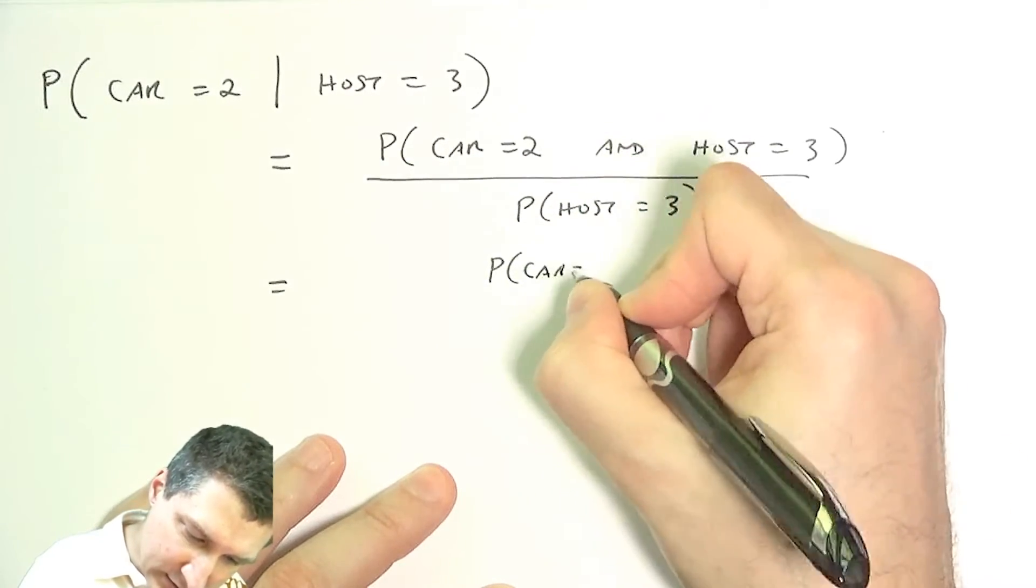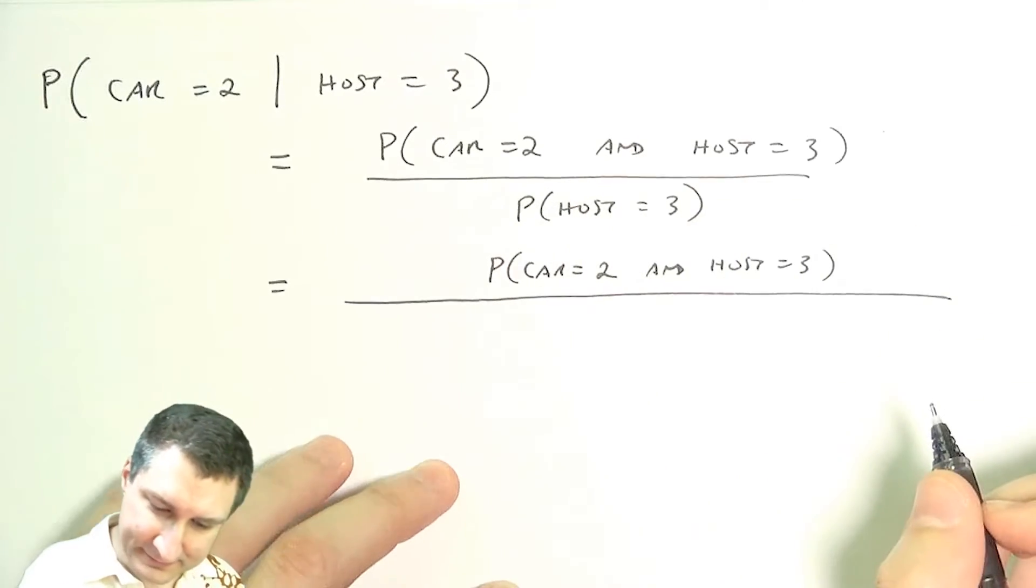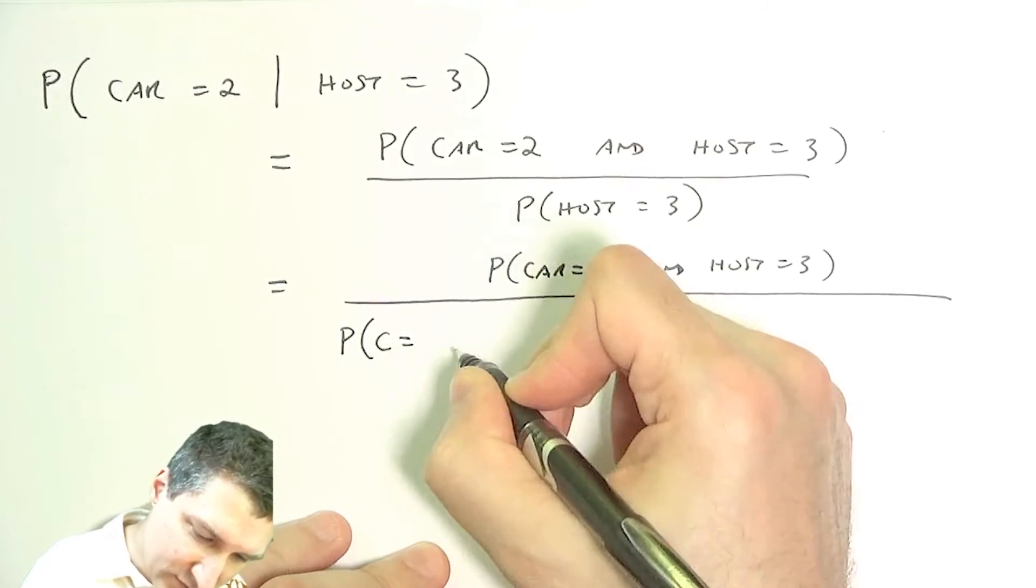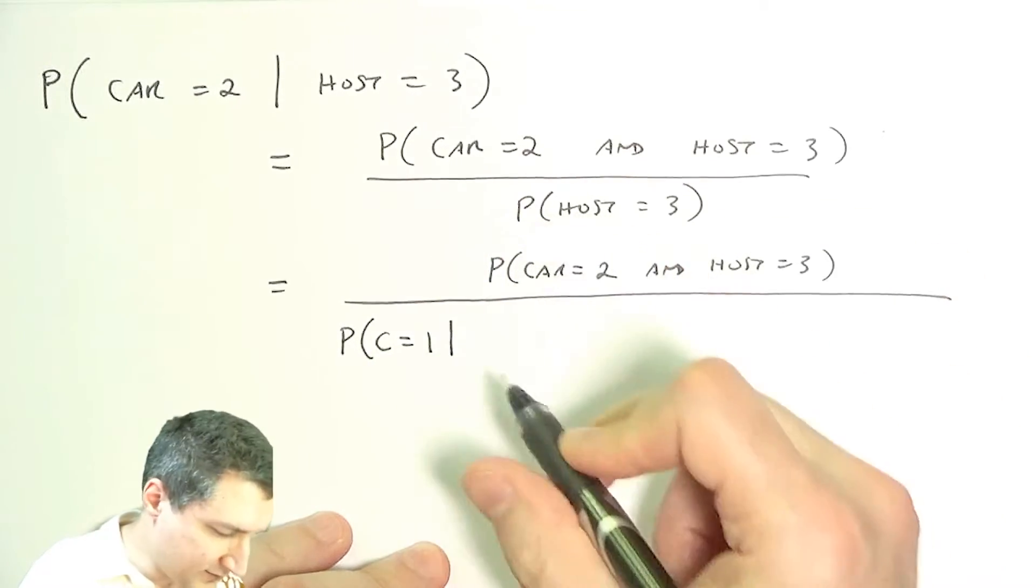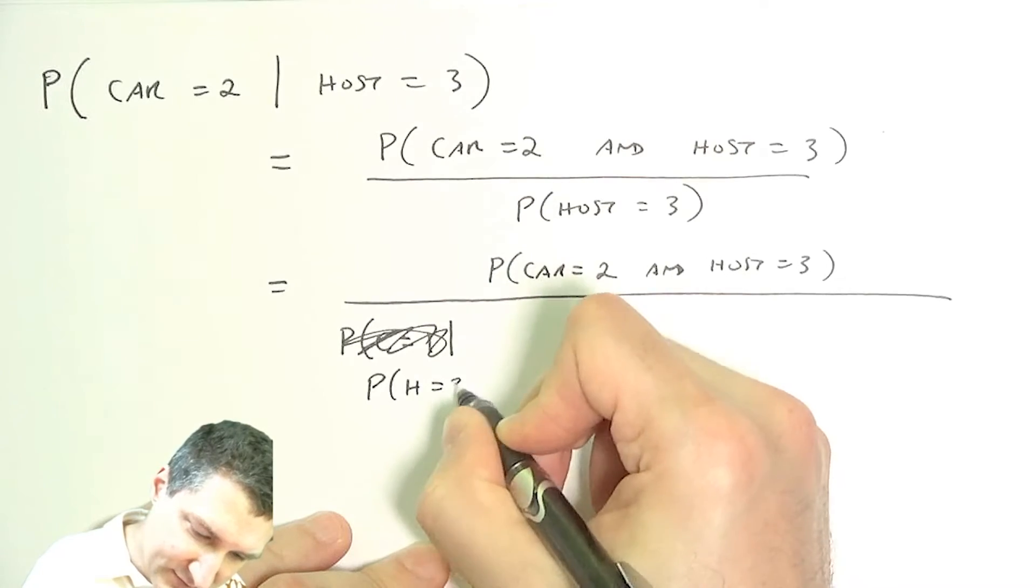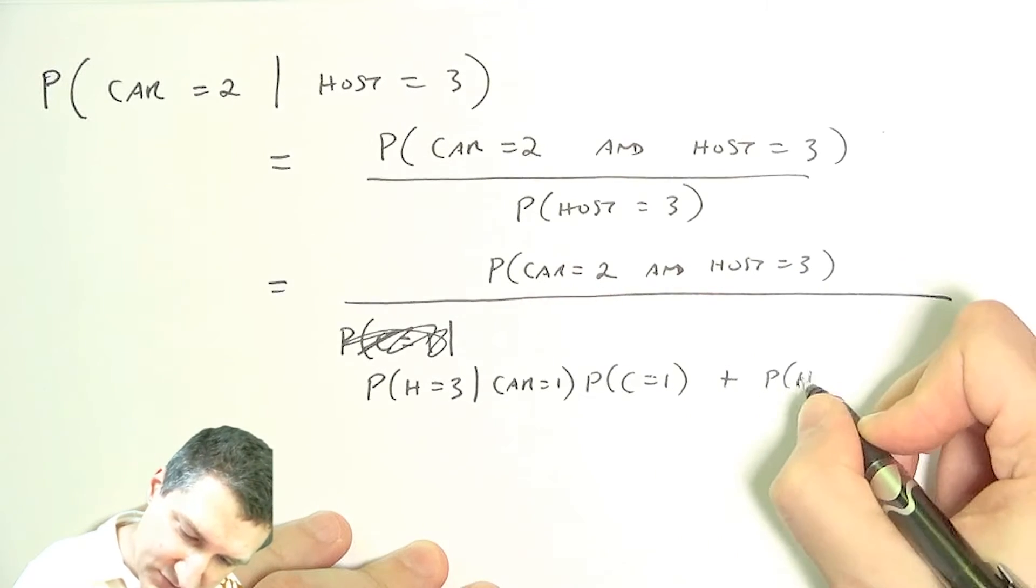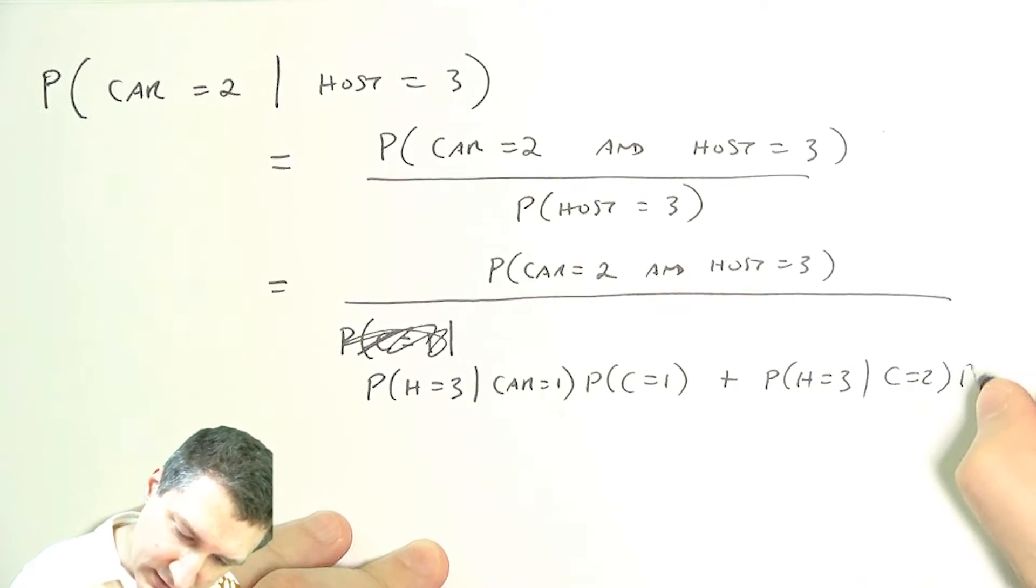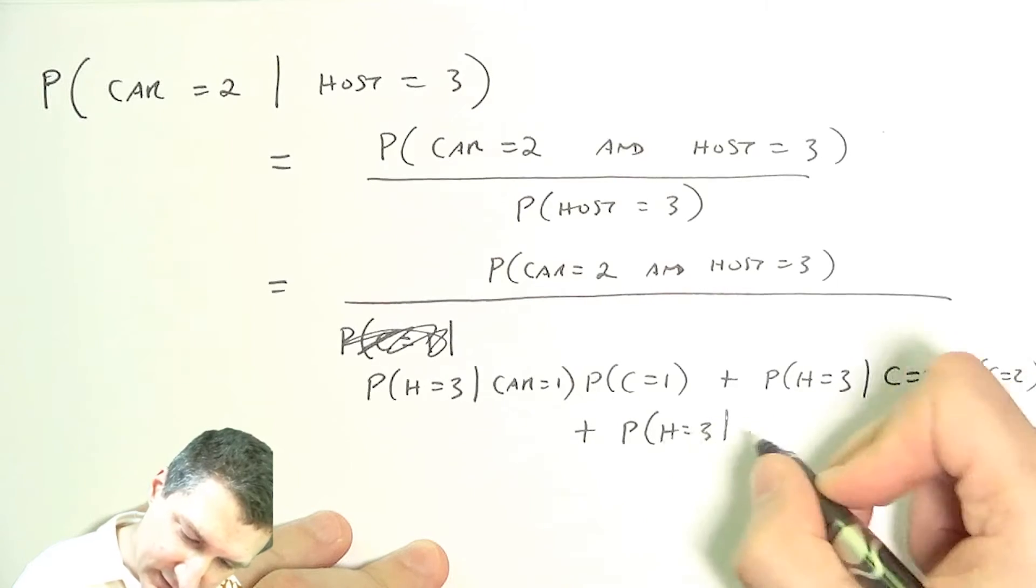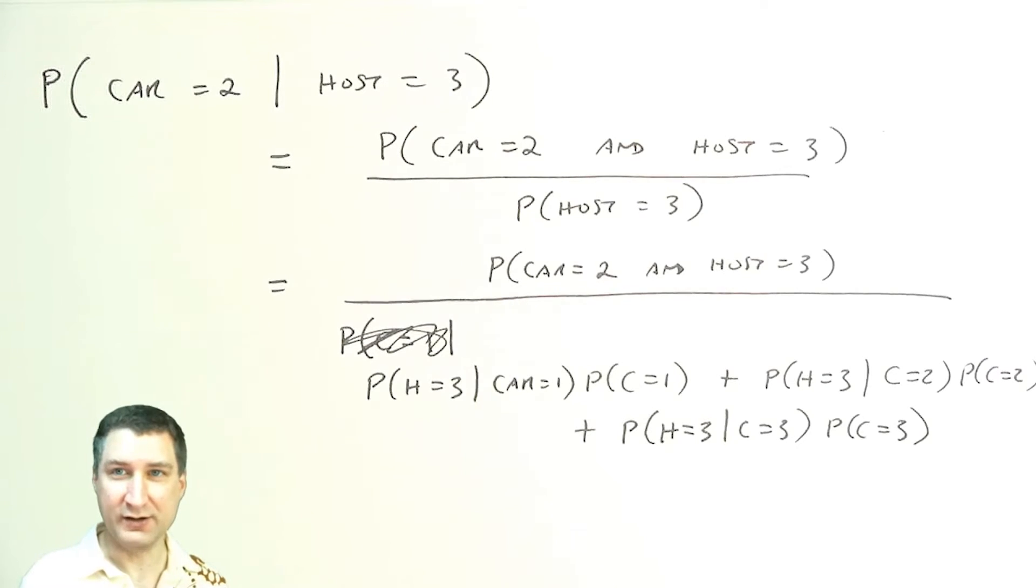And I can expand this even more. The numerator is the same. I'm going to have to abbreviate a little bit. So this is like saying the probability that the host equals three given the car equals one times the probability of the car equals one, plus the probability that the host equals three given the car equals two times the probability of the car equals two, plus the probability the host equals three given the car equals three times the probability the car equals three. All these things are gettable from the table that I drew on the previous slide.